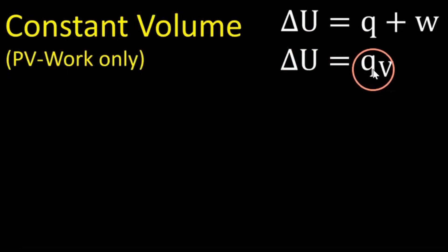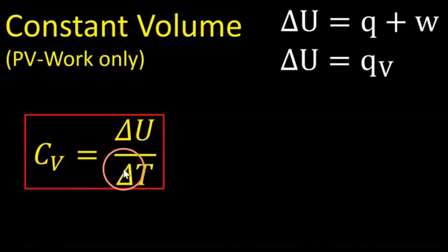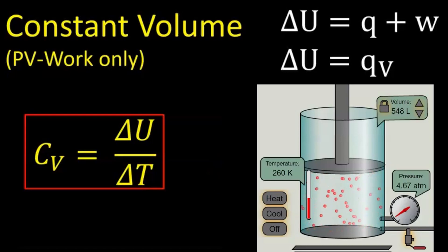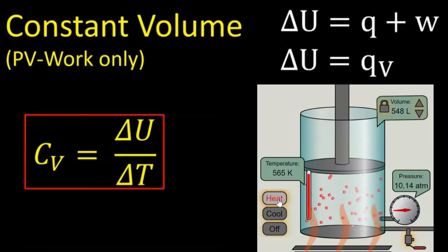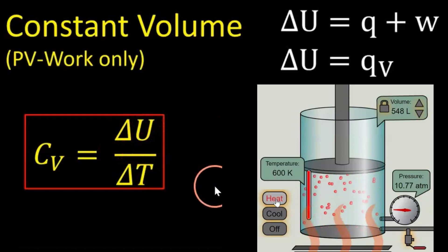So the change in internal energy equals the energy transferred as heat. Therefore, our heat capacity under constant volume is equal to the change in internal energy divided by the temperature — not the enthalpy, but the change in internal energy. In the simulation, as heat goes up, the pressure goes up as well. The volume is constant, and the energy absorbed as heat is directly related to how the internal energy changes.